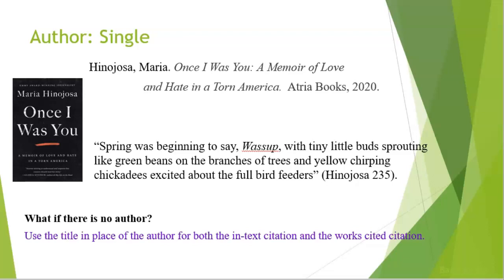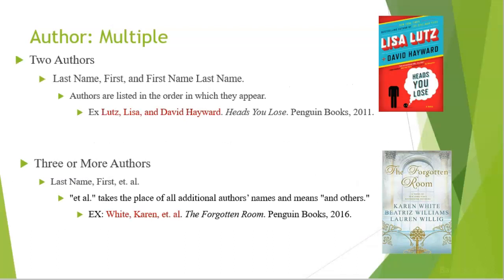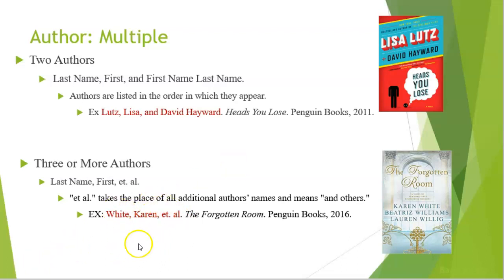What should you do if there is no author, editor, or translator? In that case, use the title in place of the author for both the in-text citation and the Works Cited citation. Things get a little trickier when you have two or more authors. With two authors, you still list the first author's name as last name, comma, first name, but then it's a comma instead of a period. The second author's name is written as regular first and last name, with 'and' before it. You put the authors in order of how they appear on the book. What if you have three or more authors? You write the first author's name as last name, comma, first name, comma, then the phrase 'et al.' which means 'and others.'